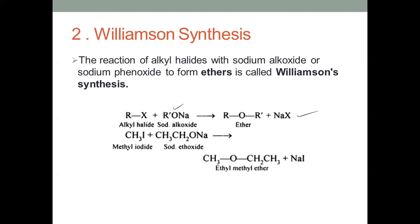For example, taking CH₃I (methyl iodide, an alkyl halide) and CH₃CH₂ONa (sodium ethoxide), the reaction gives CH₃OCH₂CH₃ and sodium iodide as a byproduct. This is how the reaction occurs.